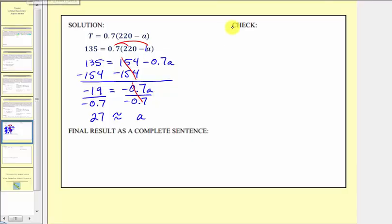For our check, we would have 135 equals, and we're substituting 27 for A in this equation. So we have 0.7 times the quantity 220 minus A, which is 27 or approximately 27. Following the order of operations, we'll simplify inside the parentheses first. So we'll have 135 equals 0.7 times 220 minus 27, which equals 193.